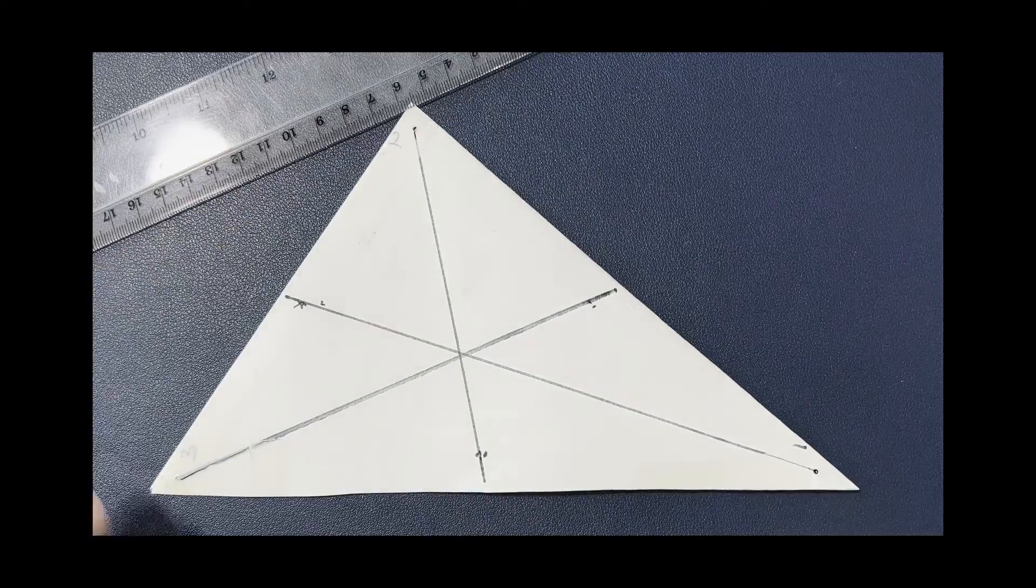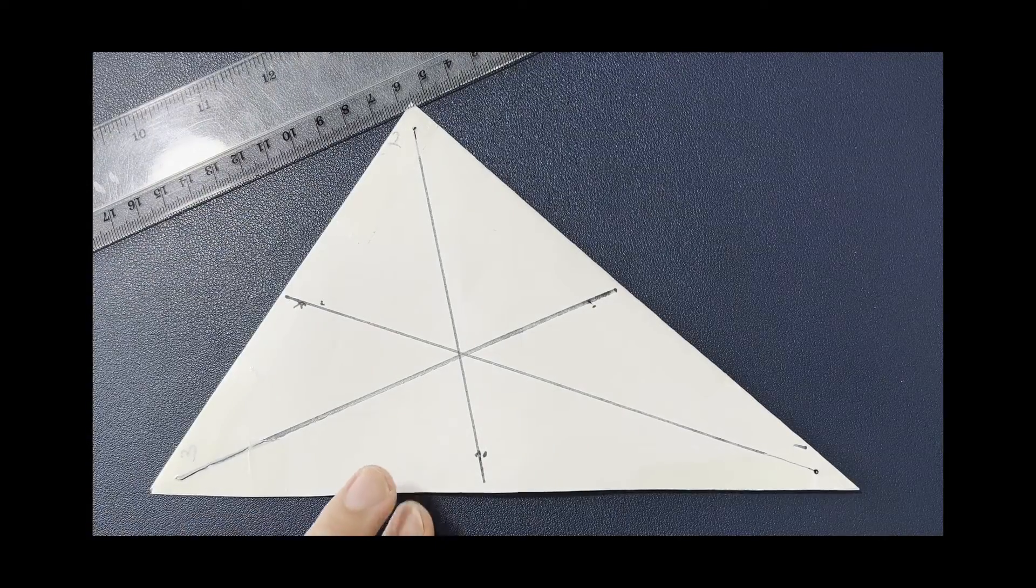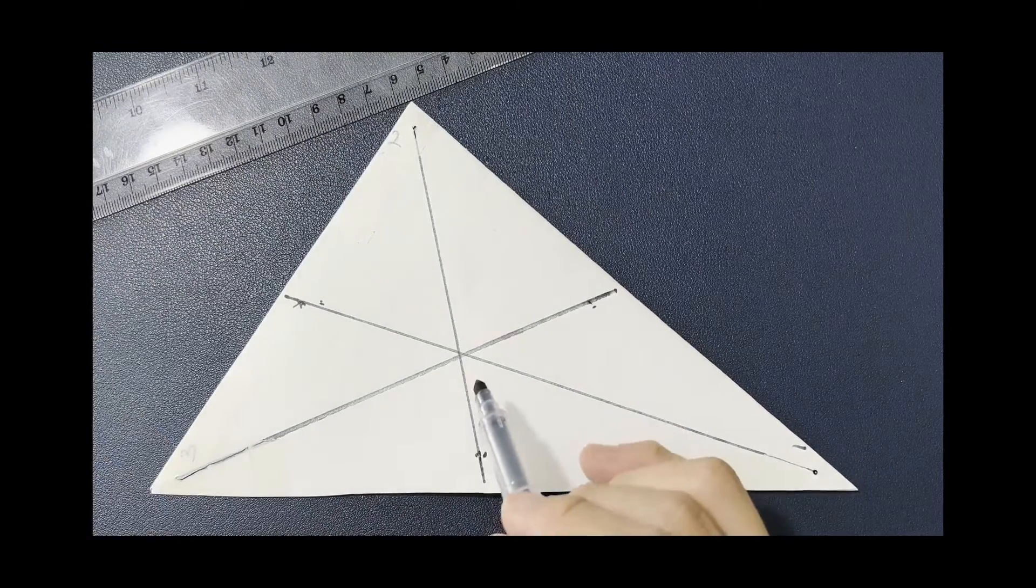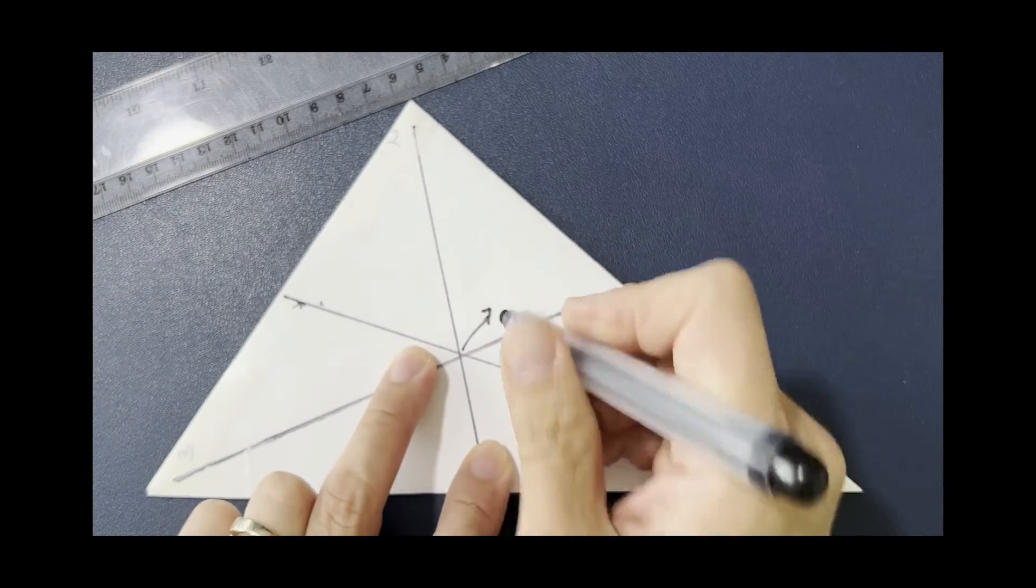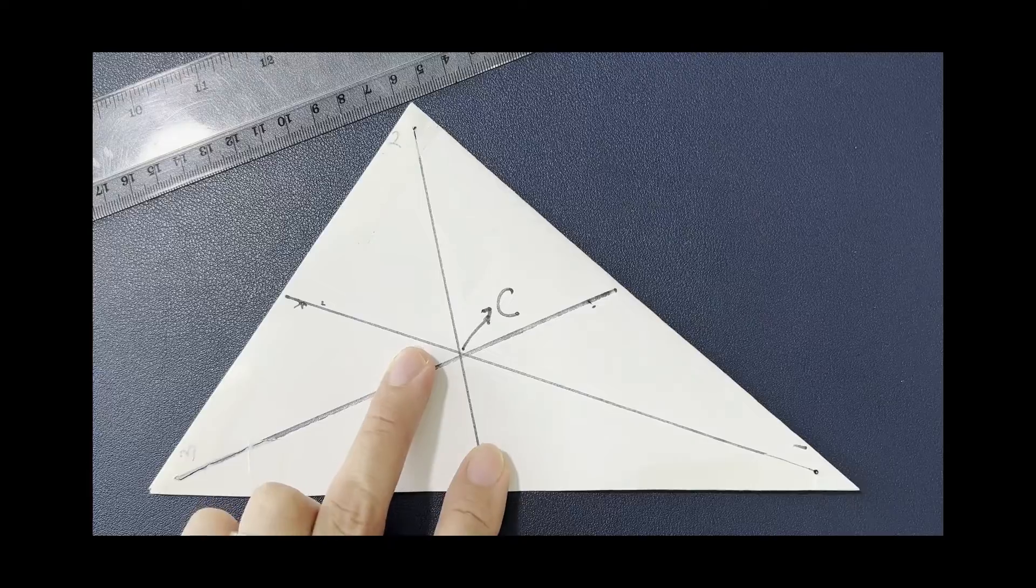You can see a point where the three lines intersect. This particular point is where the center of mass of the lamina is.